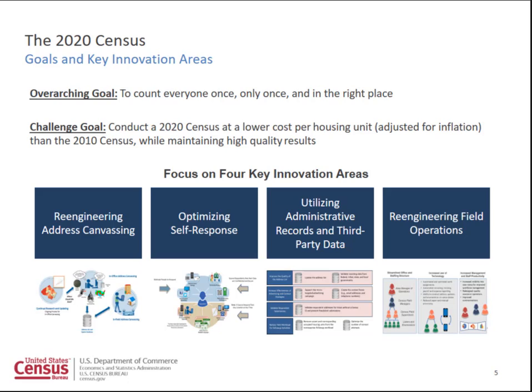The second area we focused on is self-response. We all know that the most expensive part of conducting a census is non-response follow-up. If we can encourage, engage, and motivate the population to self-respond, we can keep cost down and use resources to focus on those population groups that are hardest to count. The first way we're optimizing self-response is using an internet-first strategy. This census we will take responses over the internet. We actually did test this in 2000 with a small test, but in 2010 we did not deploy the internet for security reasons. For the 2020 census, we will. We've been actively testing this for the last few years and feel very confident with our internet collection system.